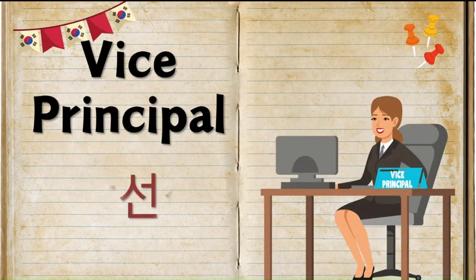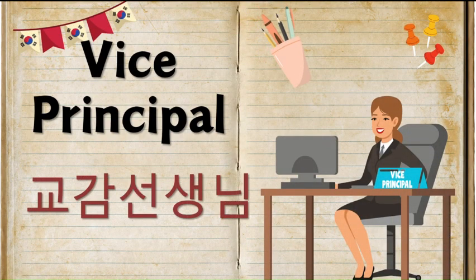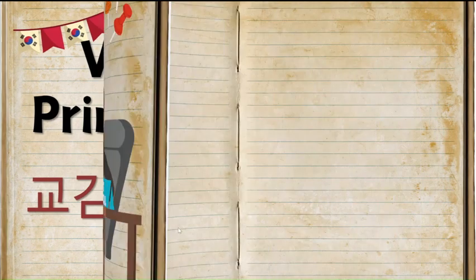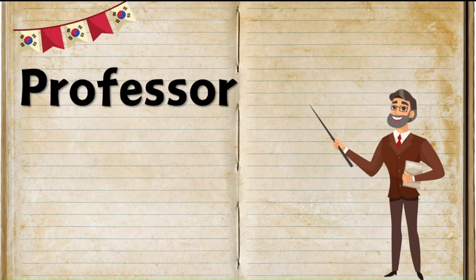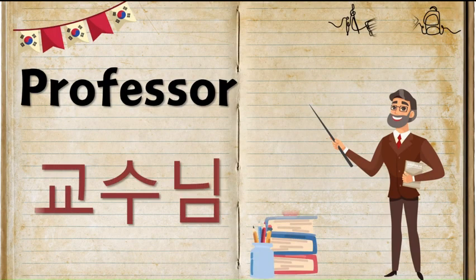Next comes the Korean word for 'vice principal,' and that is 교감 선생님 (gyogam seonsaengnim). Notice the difference: principal is gyojang, and vice principal is gyogam.